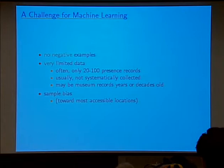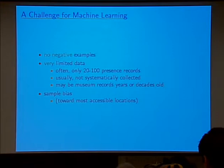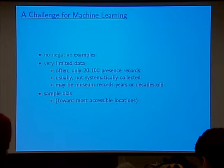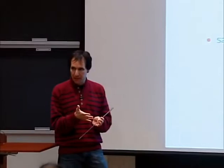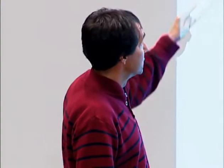One reason biologists lack absence records is that when they go out to the field and look for various species, they record the ones they see but don't record the thousands of species they did not see at a given location. They're also suspicious of absence data — if you sit somewhere for an hour and don't see a particular bird, it doesn't mean that bird doesn't live there.